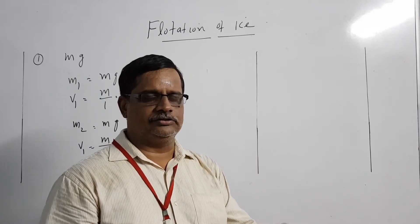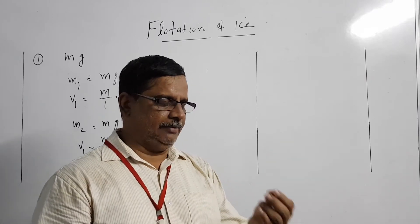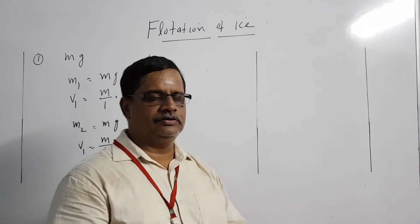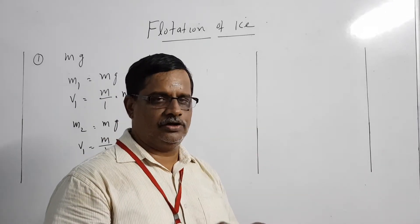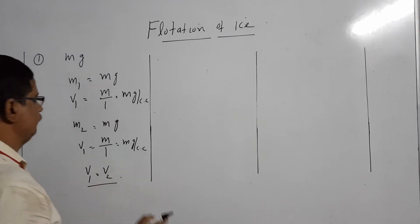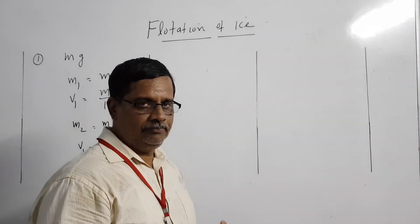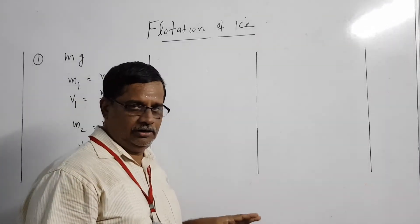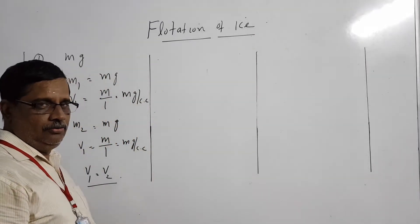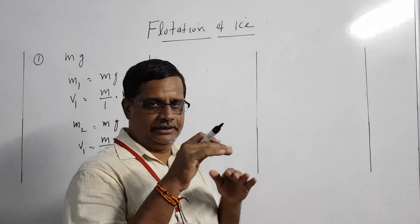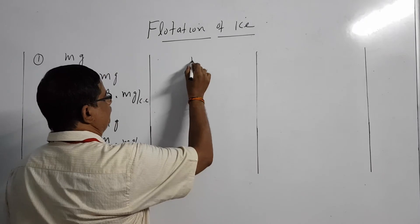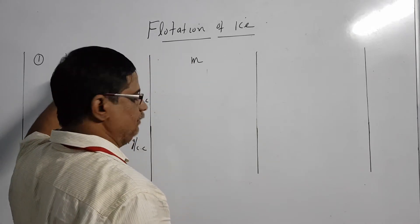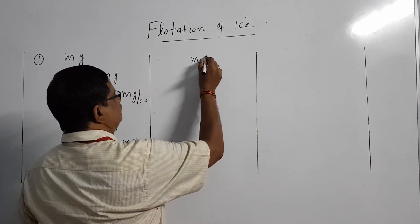When the ice melts, the embedded object — which could be a lead shot, grain of sand, or piece of stone — will sink to the bottom of the container. We don't need to consider the mass of the ice block itself, because we already showed that ice melting causes no level change. We are only interested in the mass of the embedded object. Let the mass of that object be M grams.